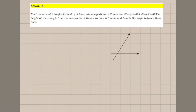Hello guys, today we will see some practice problems on straight lines. I have created seven problems which cover most of the topics we have discussed in straight lines. If you could solve these seven problems on your own, then you are pretty good at straight lines. Problem one: find the area of triangle formed by three lines, where the equations of two lines are √3x + y − 2 = 0 and √3x − y + 2 = 0, the height of the triangle from the intersection of these two lines is 5 units.